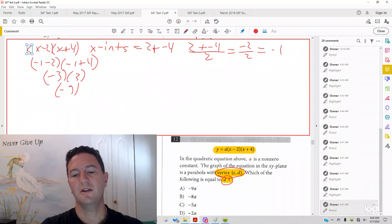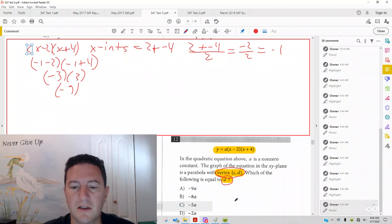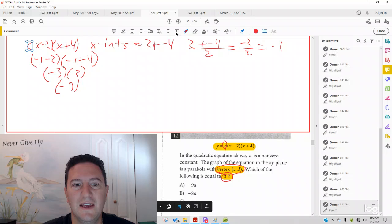In other words, it's looking for the y part of the vertex. Remember, you have that a up there as well. So here your correct answer is negative 9a.